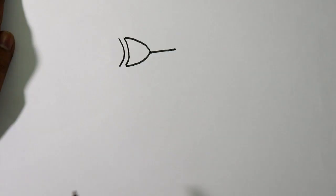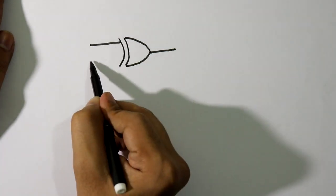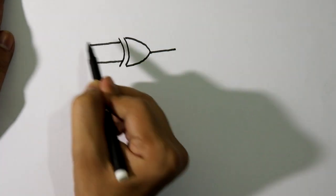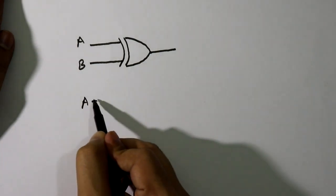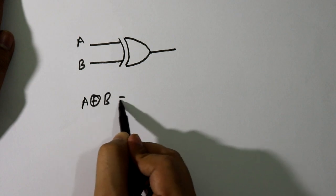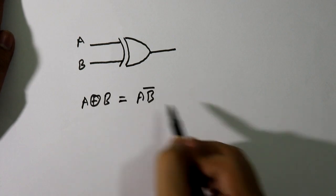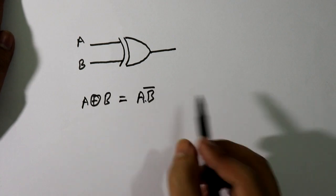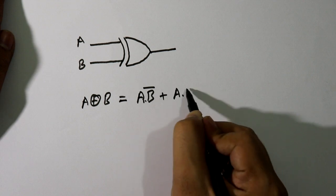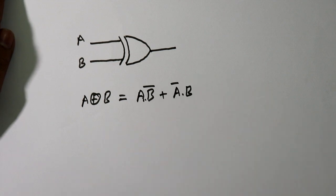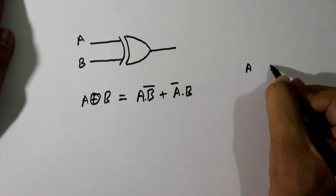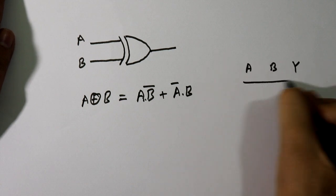The symbol of XOR is like this. Here input A, input B. We know A XOR B is equal to A dot complement of B, plus complement of A dot B.